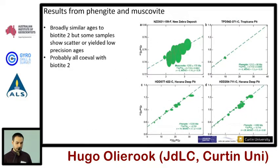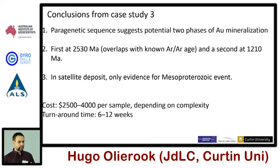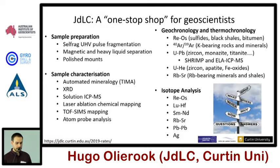We can get similar results from muscovite and phengite also present in the samples, though it's slightly more scattered. The conclusions: the paragenetic sequence shows two assemblages — the first at ~2530 Ma and the second at ~1210 Ma. Importantly for regional gold exploration, the satellite deposits in the wider belt seem to only have evidence for this Mesoproterozoic event. This technique is slightly more expensive than uranium-lead, mainly because it's complex and we're still in early development, but it may have been the only solution for this particular company.